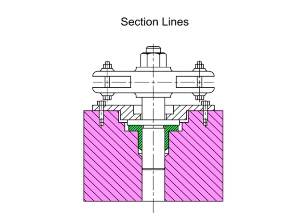Section lines illustrate where material would be if the part were sectioned or cut, as if with a saw. Different patterns or direction of lines indicate different sections of the object.